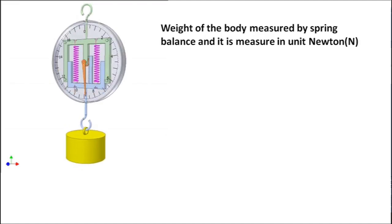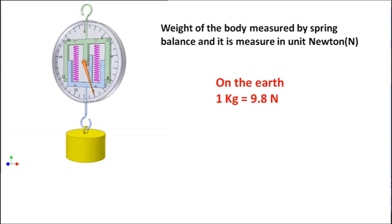Weight of the body is measured by spring balance and expressed in units of Newtons. On Earth, 1 kilogram equals 9.8 Newtons.